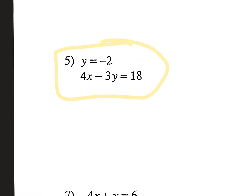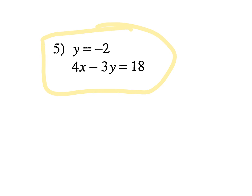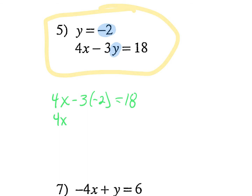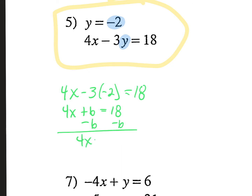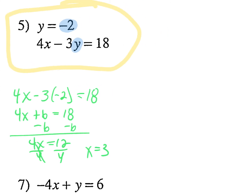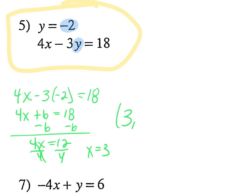Let's look at the next one. Is this already set up nice and easy for us? Everywhere I see a y, what am I going to plug in? I have 4x minus 3 times negative 2 equals 18. 4x plus 6 equals 18. Subtract 6 from both sides: 4x equals 12. Divide by 4 and x equals 3. My ordered pair is 3 comma negative 2.